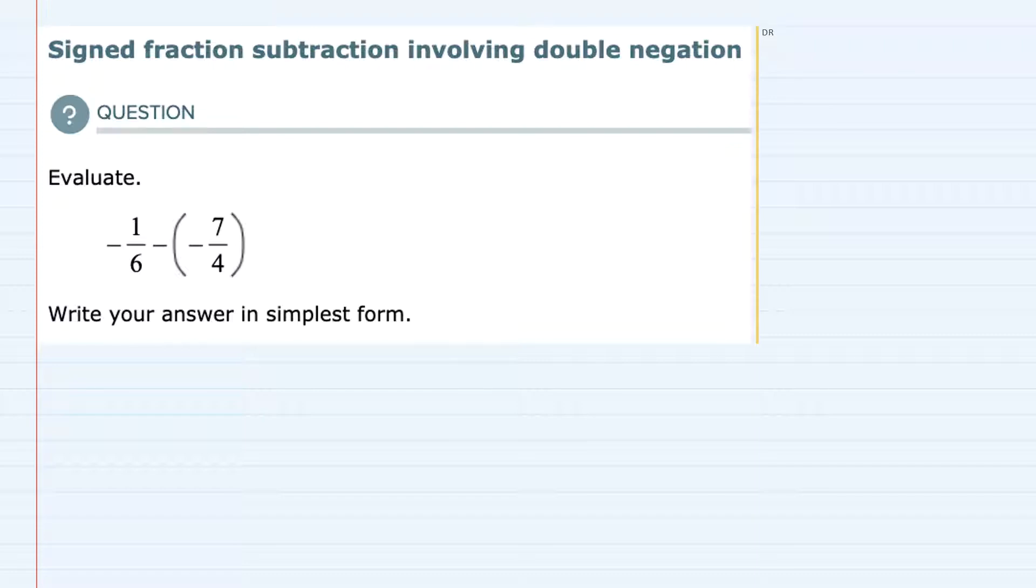To get things started, anytime we're adding or subtracting fractions, we need to have a common denominator. And in this example, our denominators are 6 and 4.